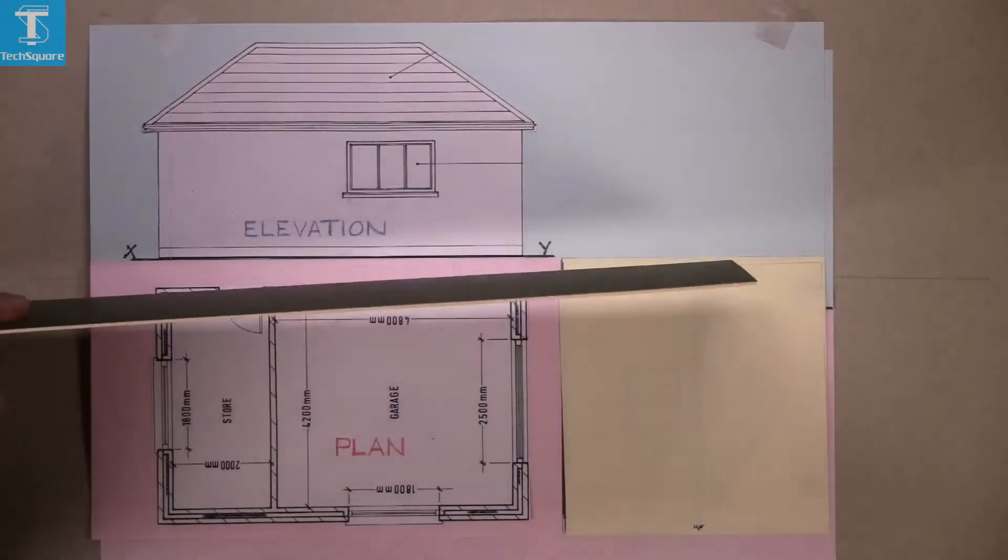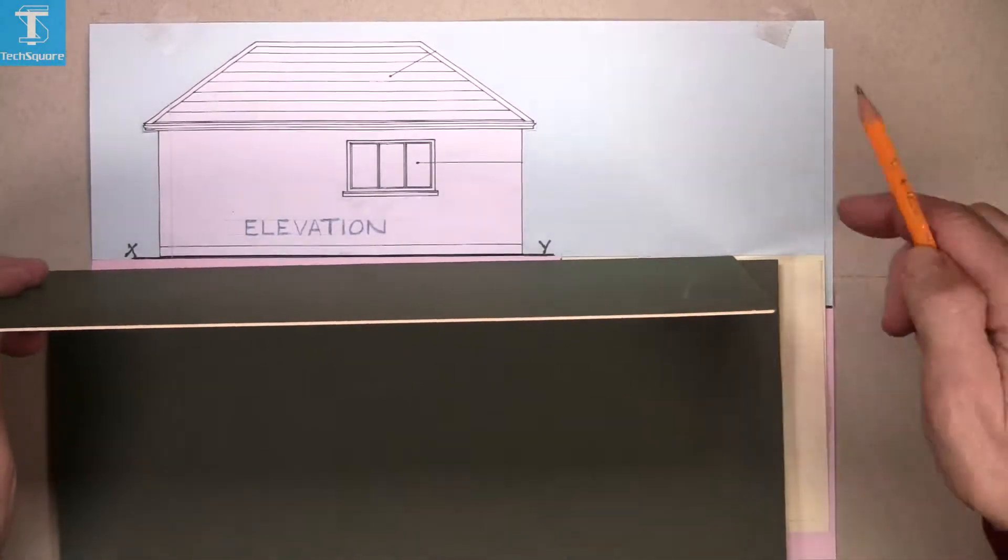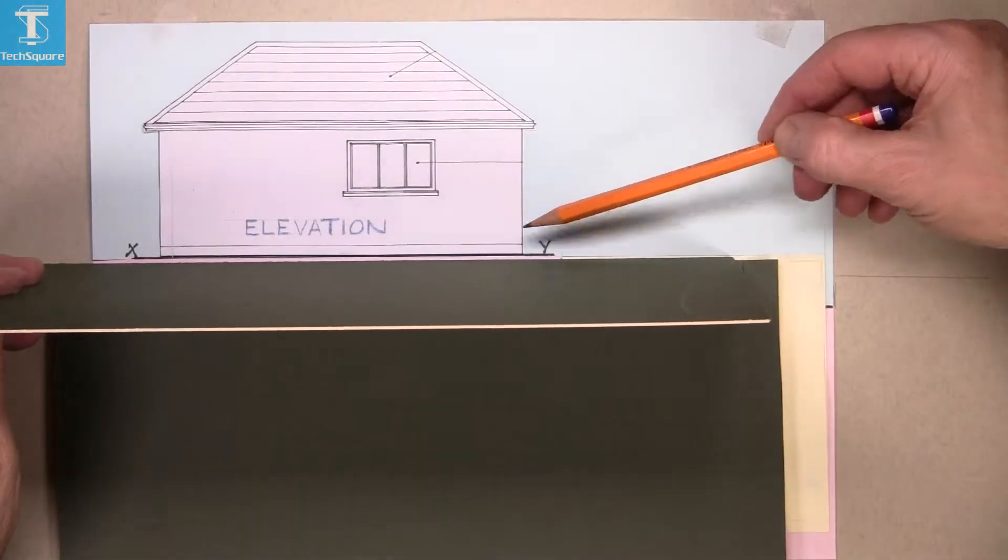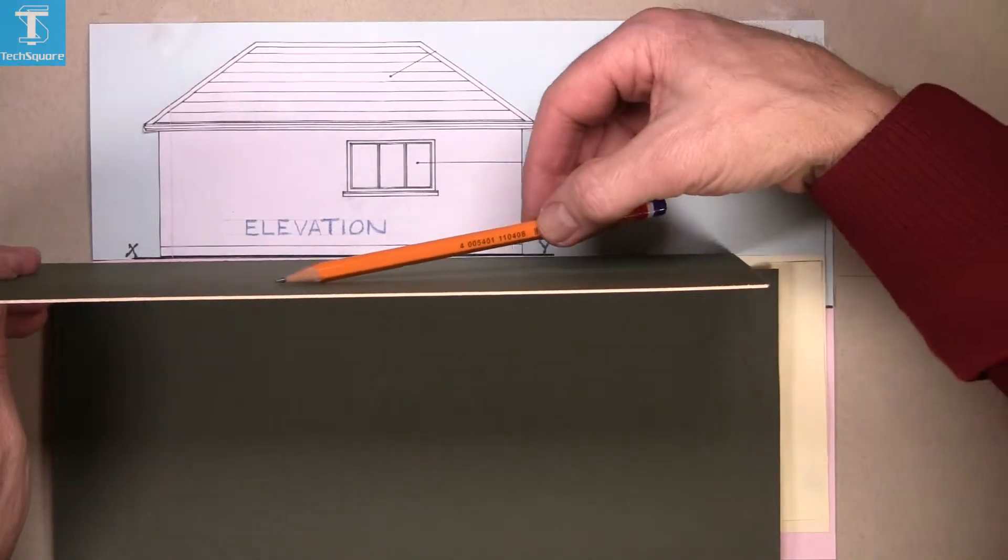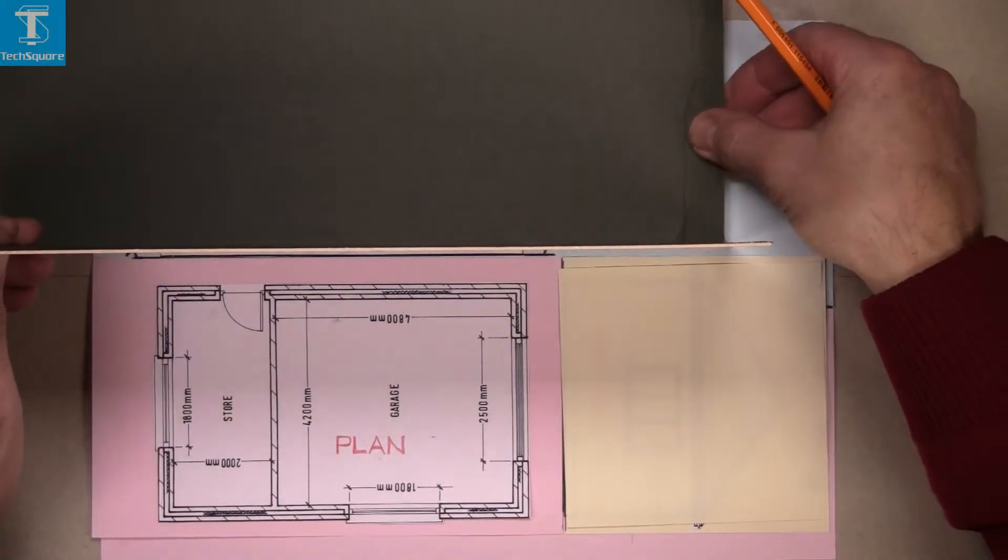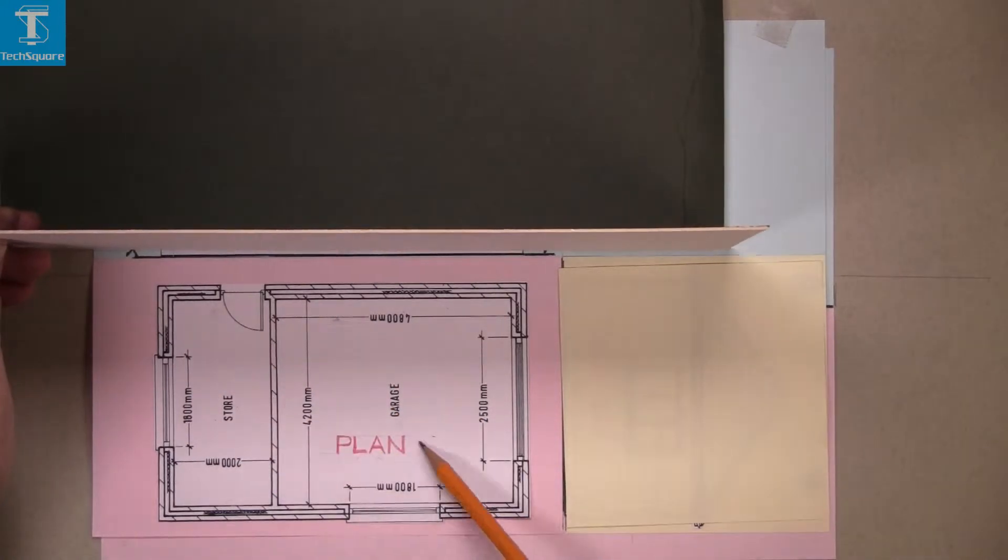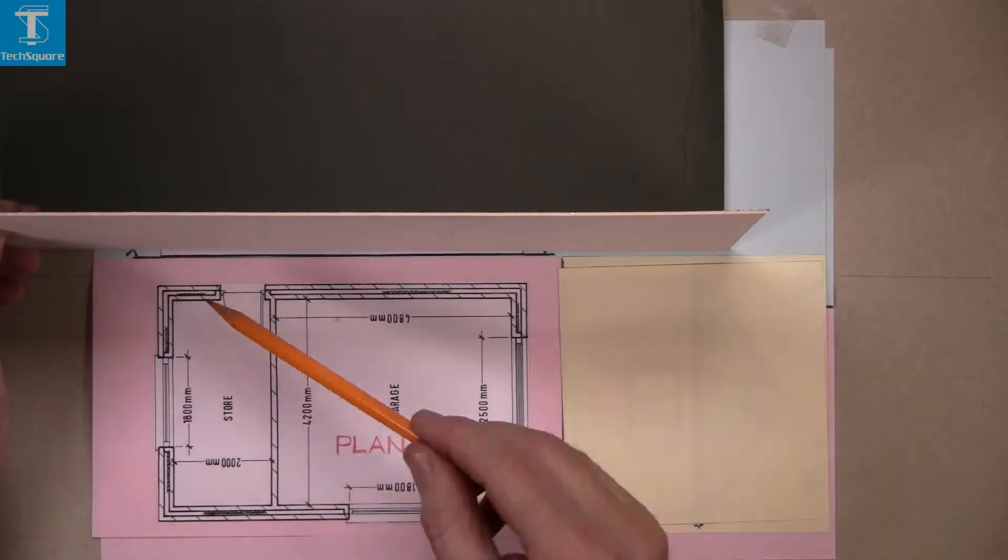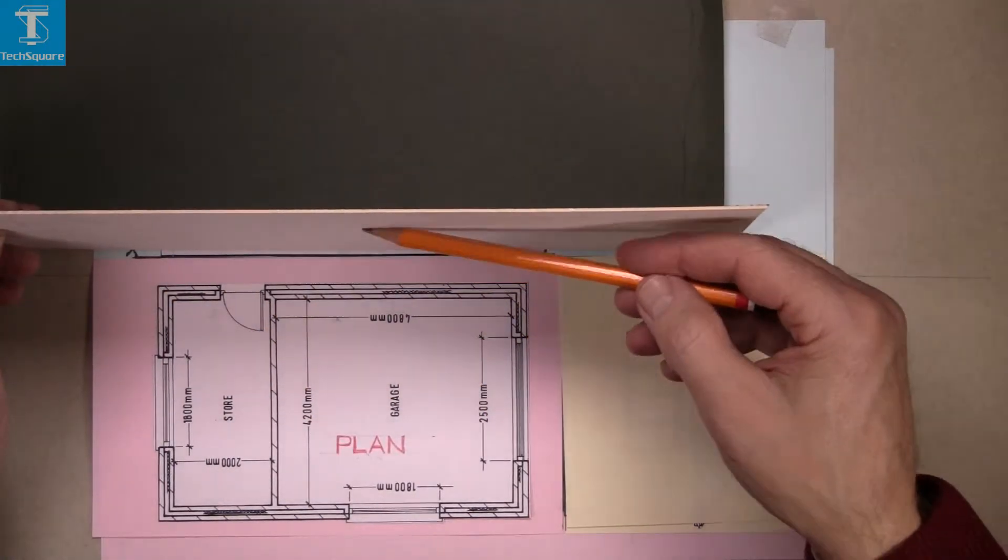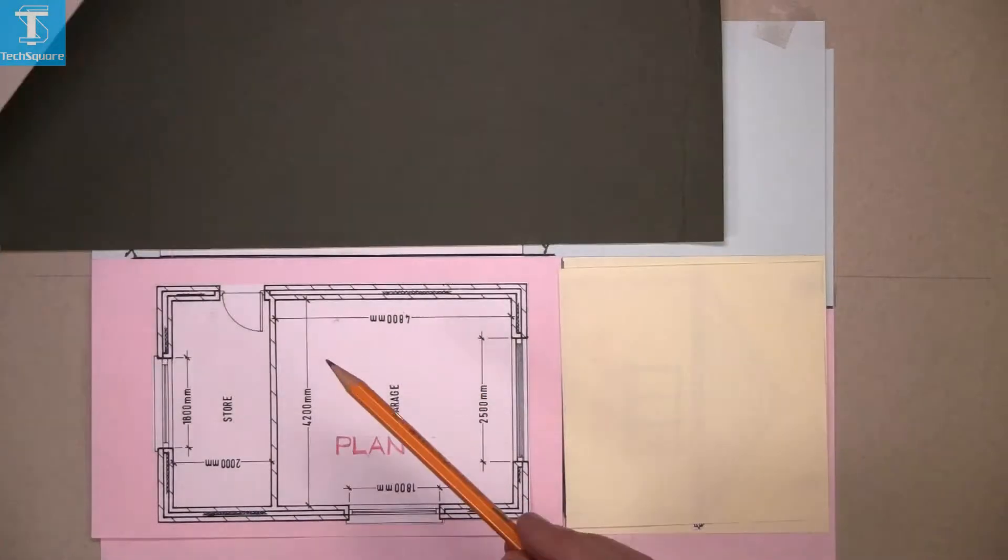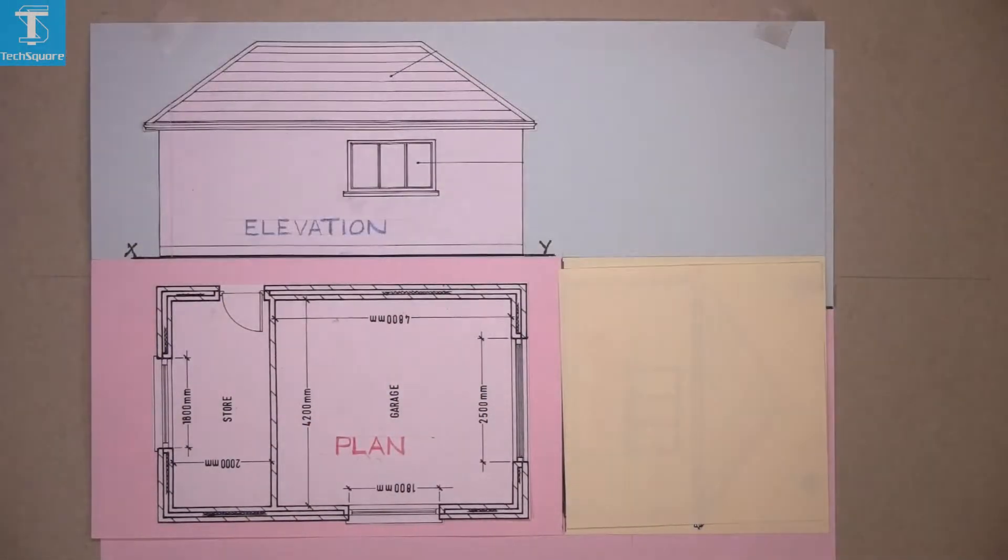Now when we're looking at the elevation, the XY line becomes this line here, the ground or the horizontal plane. So the XY line represents the horizontal plane there in the plan here. Now when we're looking straight down on it, the XY line represents the vertical plane or a wall, a vertical surface. The XY line will always be either the vertical surface or horizontal surface.